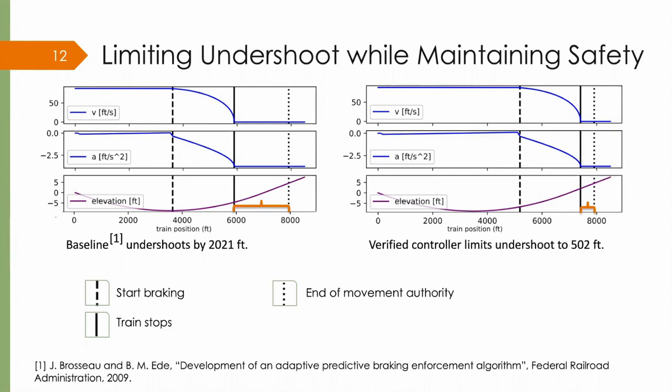the verified controller limits undershoot to 502 feet. The reason the baseline controller is so conservative is that in order to compensate for the inaccuracies of numerical integration, it adds a fudge factor, a safety offset.